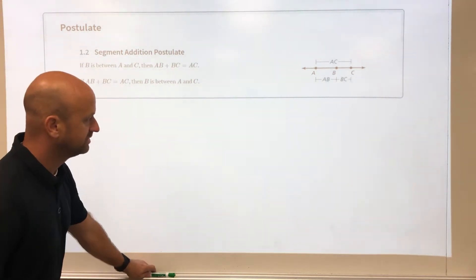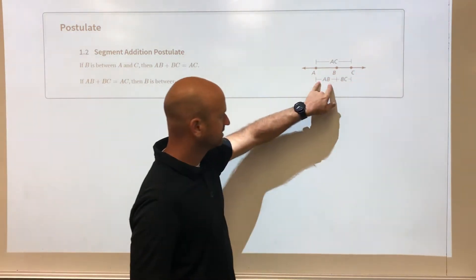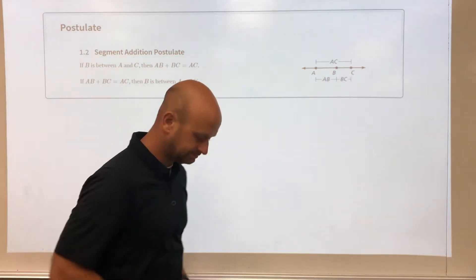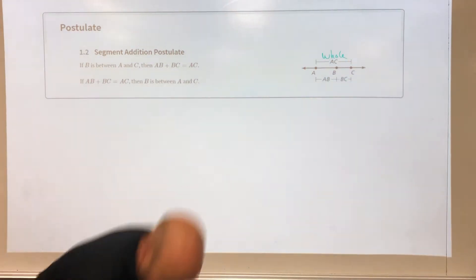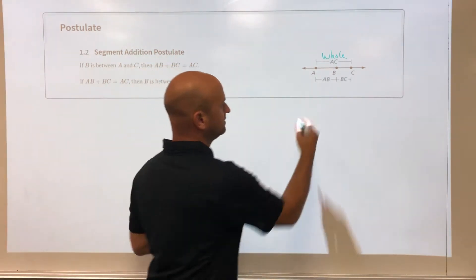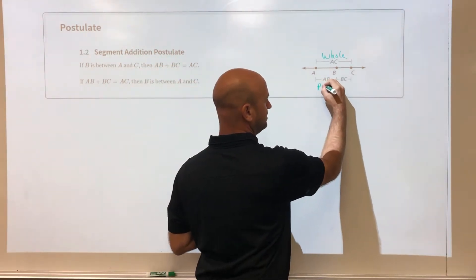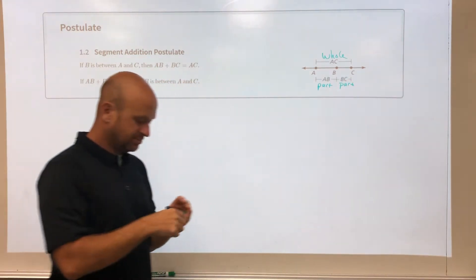In simple terms, we have this diagram and it shows segment AC, segment AB, and segment BC. What this is: AC is the whole thing. Segment AC is the whole segment, segment AB is a part, and segment BC is a part.